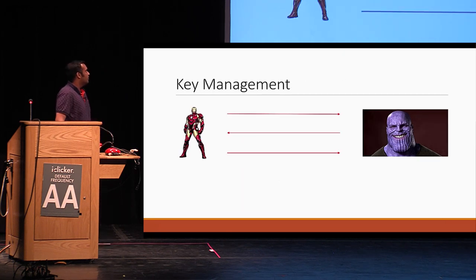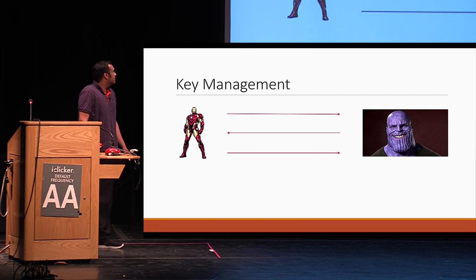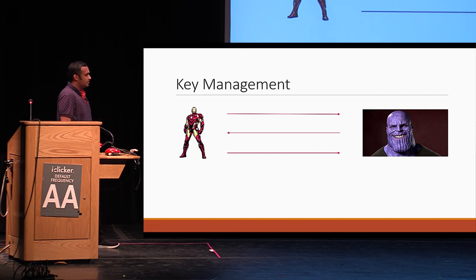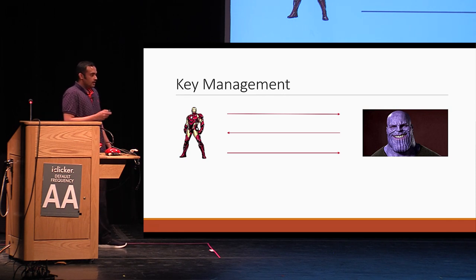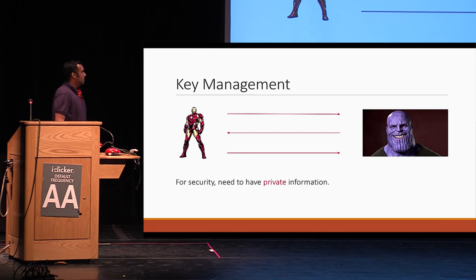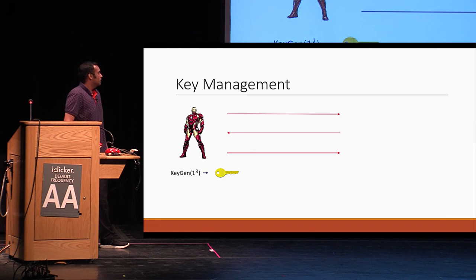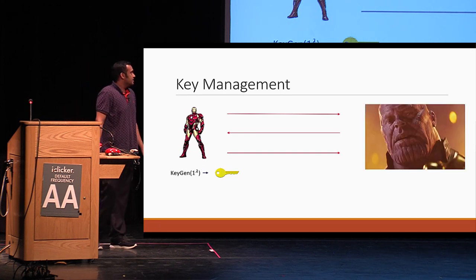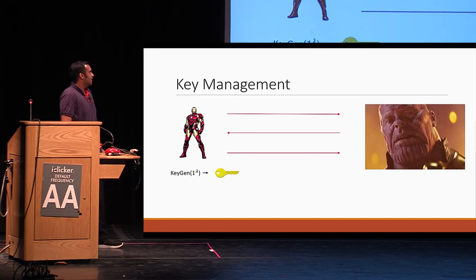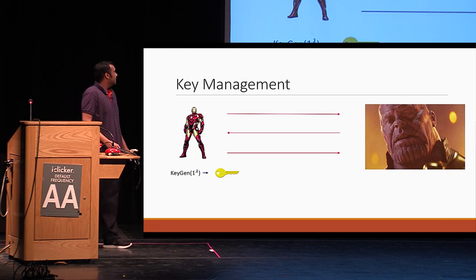Consider this following motivating example. Suppose Tony wants to send across some messages over a channel, and let's say he maintains no private information whatsoever. So of course, in this setting, it's pointless to ask for any kind of security. So it's essential for security to have some kind of private information. So now let's say he generates a key for an encryption scheme and uses it to encrypt the messages before sending it over the channel. In this setting, Thanos suddenly finds himself in trouble because now he cannot understand what Tony is trying to say.